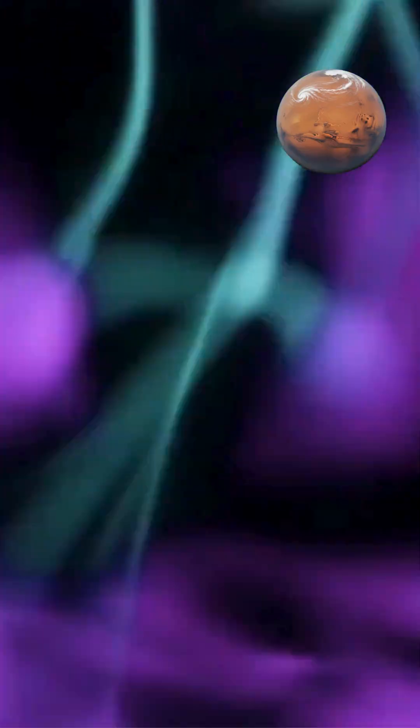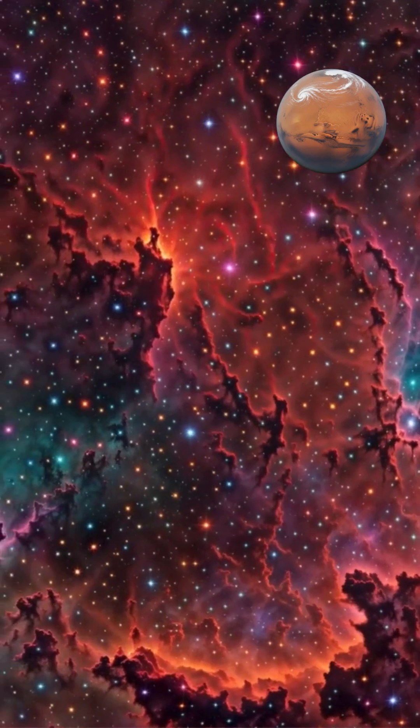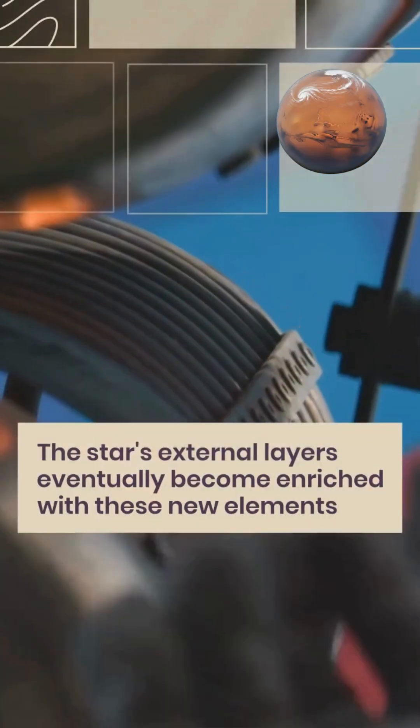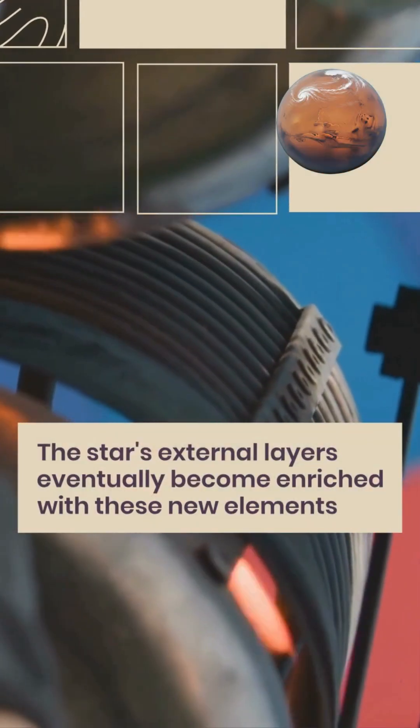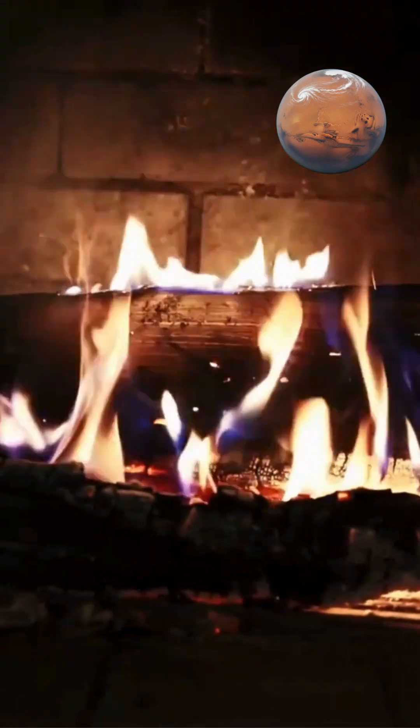Convection within stars mixes these newly created elements throughout the stellar interior, gradually distributing fresh gases and altering the star's overall composition. The star's external layers eventually become enriched with these new elements, though they may not escape the star during its normal lifetime.